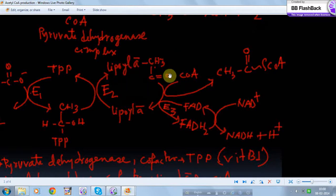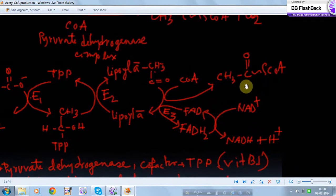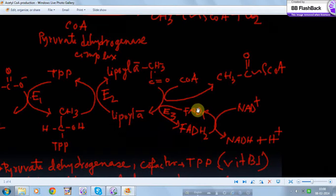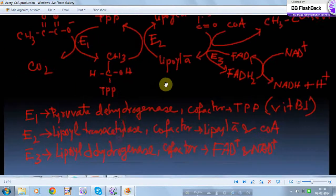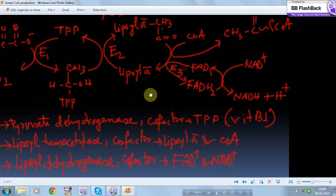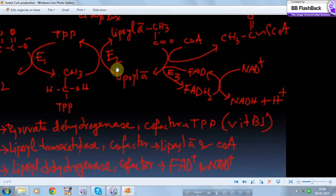Then coenzyme A comes into play and replaces the lipoic acid, forming acetyl-CoA. The lipoic acid gets oxidized further — this is the oxidized form of lipoic acid — and it is again ready for the next cycle. This oxidation happens because FAD, a cofactor bound to enzyme E3 (dihydrolipoyl dehydrogenase), takes away hydrogen from the lipoic acid.